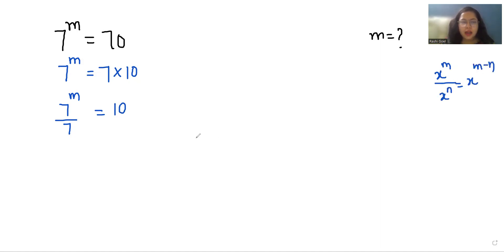That is 7^1, so 7^(m-1) equals 10. Now I am taking log both sides.